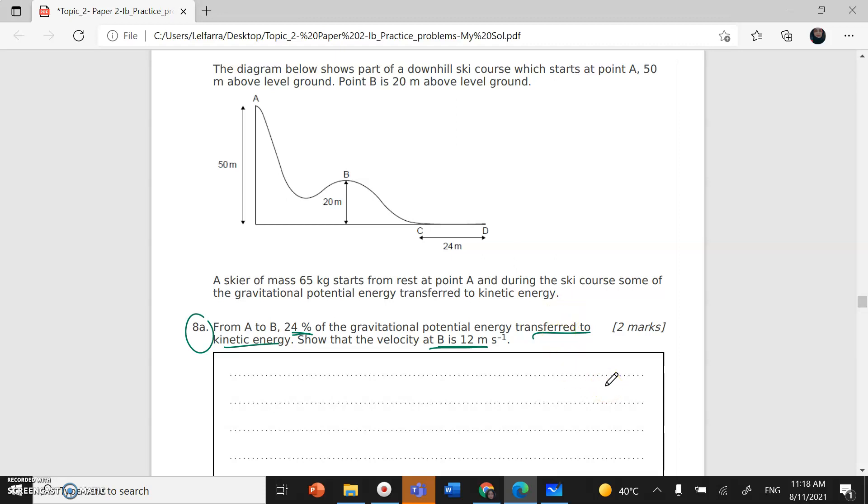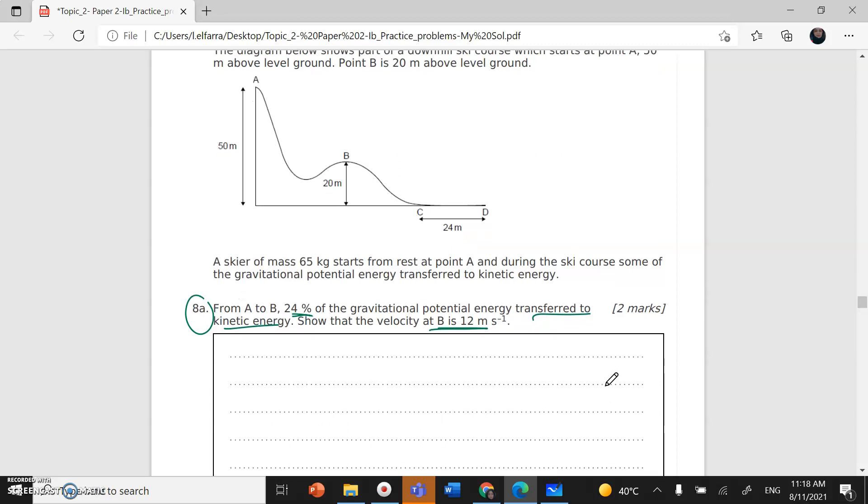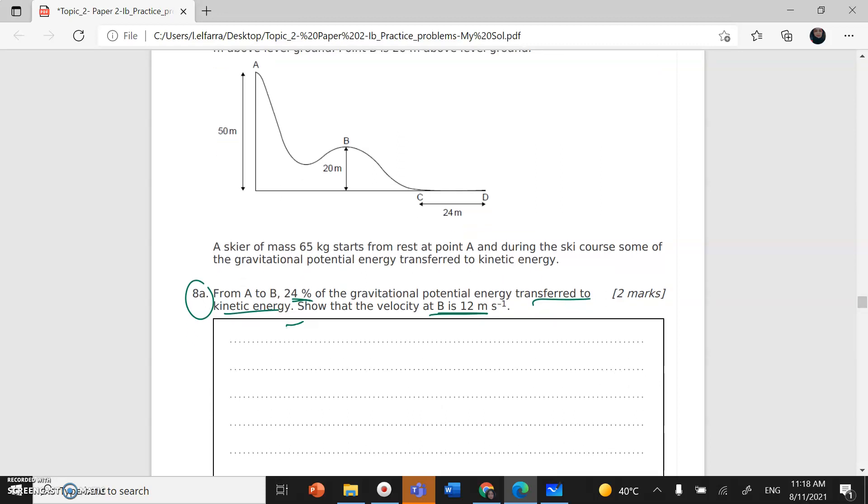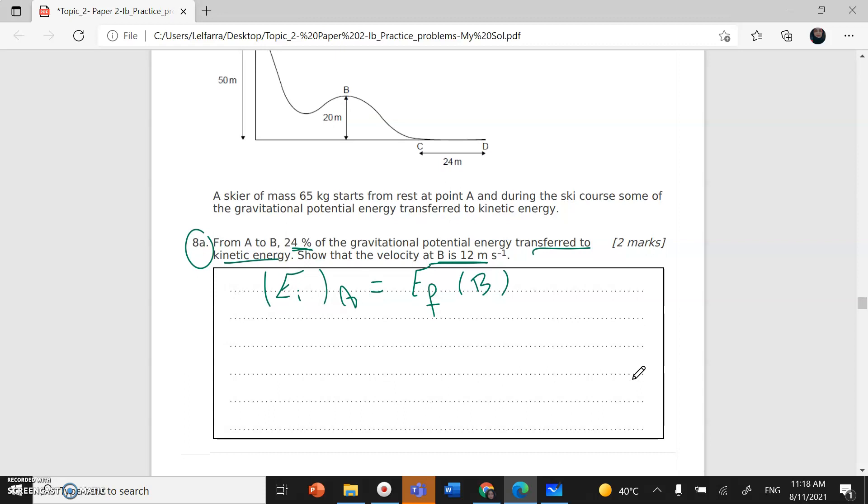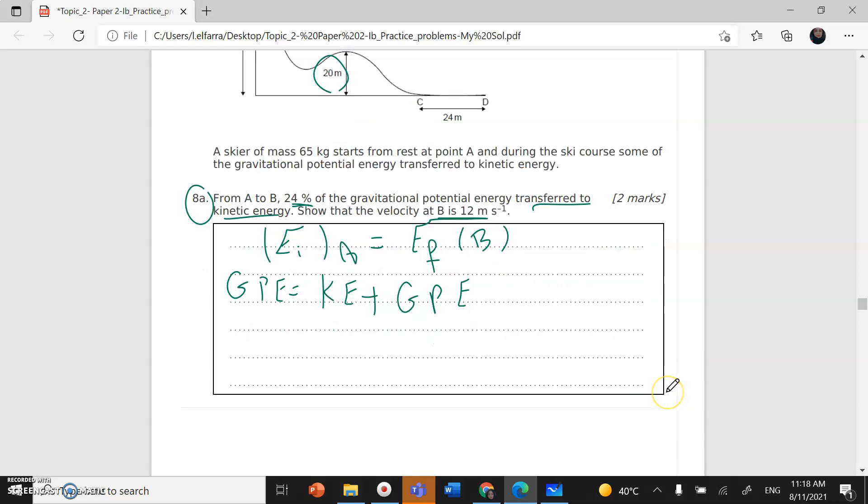Some of the gravitational potential energy is transferred into internal energy because of the friction, slightly increasing their temperature. Distinguish between internal energy and temperature. This is from topic three. Internal energy is the kinetic energy plus the potential energy of the atoms or molecules, while temperature is a measure of the kinetic energy of the molecules.